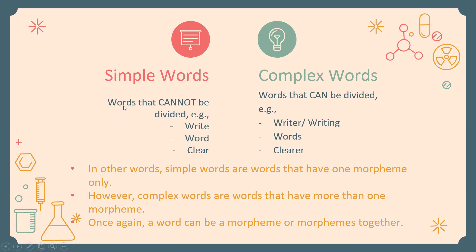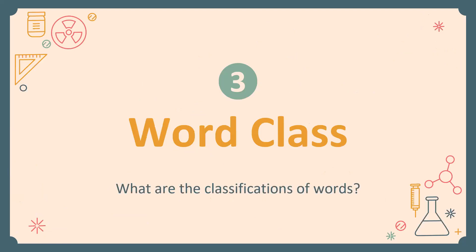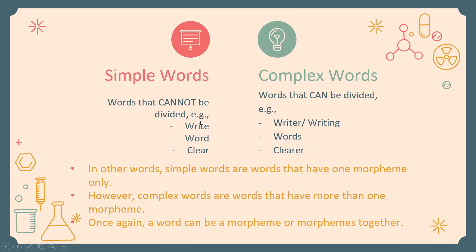In other words, simple words have one morpheme only. Complex words have more than one morpheme. For example, 'rewriting' contains three morphemes: 're-', 'write', and '-ing'. Just as in phonology we had the phoneme as the smallest sound unit, in morphology the morpheme is the smallest written unit. 'Write' is one morpheme; 'writer' has two morphemes: 'write' and '-er'.